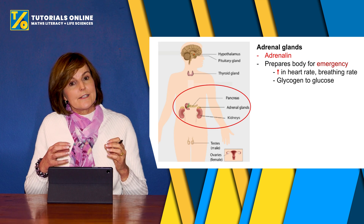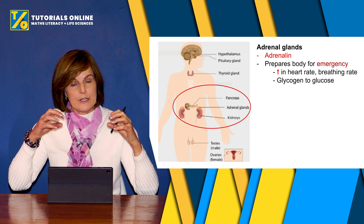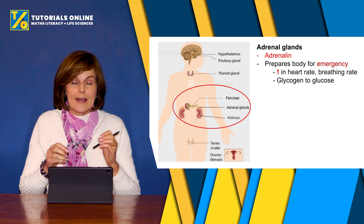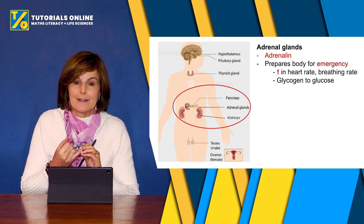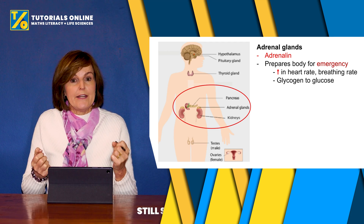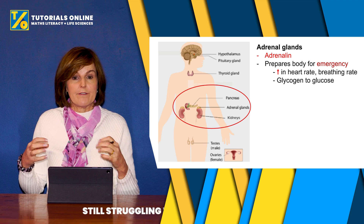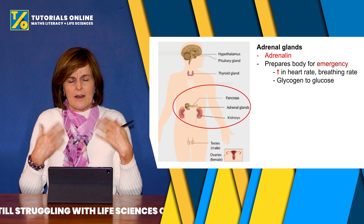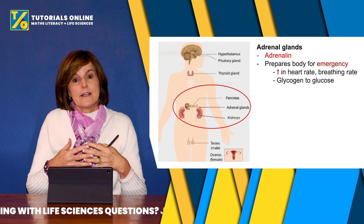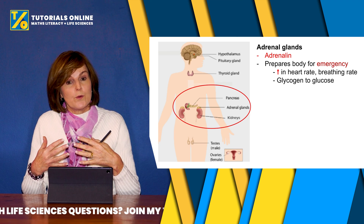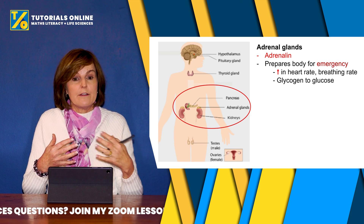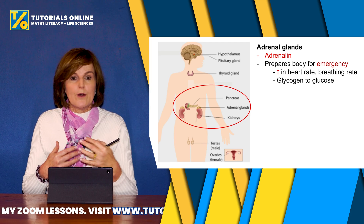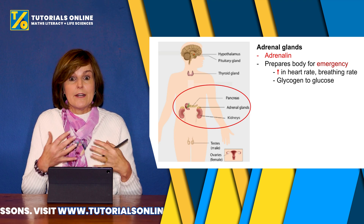On top of your kidneys you have an adrenal gland on top of each kidney. They are triangular-shaped glands and they secrete two hormones. The first is adrenaline. Adrenaline gears you up for any emergency — that fight-or-flight reaction — because it increases your heart rate, makes your breathing rate go up, and releases stored glycogen into the bloodstream as glucose, so that you can run away or fight or do whatever you have to do in an emergency.